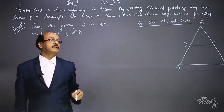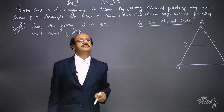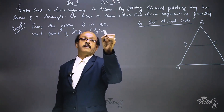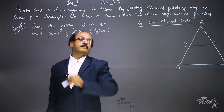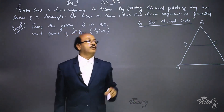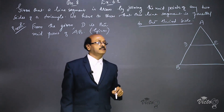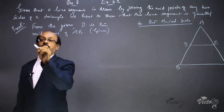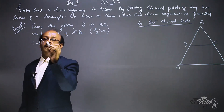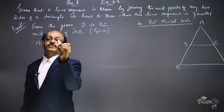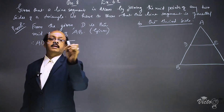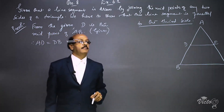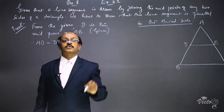Since D is the midpoint of AB, we have AD = DB, which implies AD/DB = 1. We name this as equation number 1.